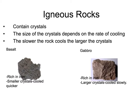Igneous rocks contain crystals. The size of the crystal depends on how fast they cool down — the slower the rock cools, the larger the crystals are; the faster the rock cools, the smaller the crystals are. Two igneous rocks are basalt and gabbro. Basalt is really rich in iron and has small crystals, indicating it was in a region of volcanic activity where it cooled quite quickly. Gabbro is also rich in iron but made from larger crystals that cooled slowly, meaning it must have been in a hotter area where it took a long time for the rocks to cool down.